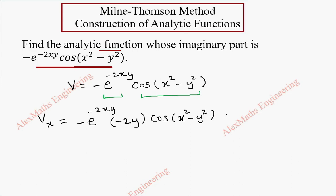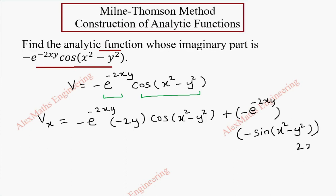The second term is written as it is. Plus, the first term is written as it is — that is minus e to the power minus 2xy — and the derivative of cos is minus sin of x squared minus y squared, and again by chain rule this gives 2x. Now we have found vx.